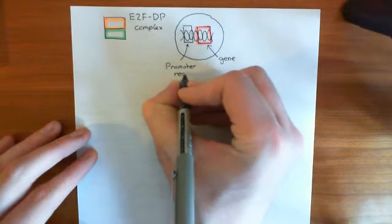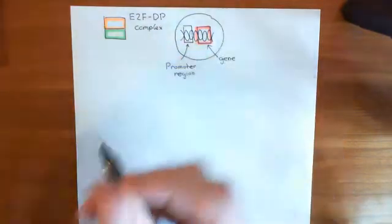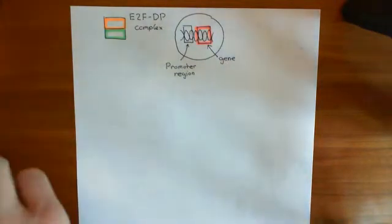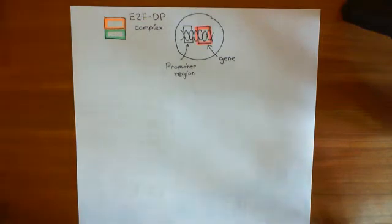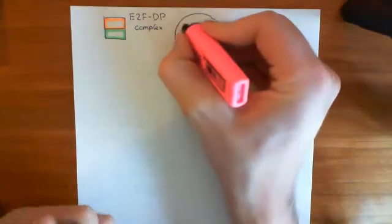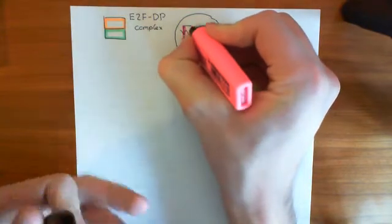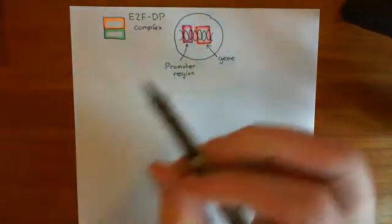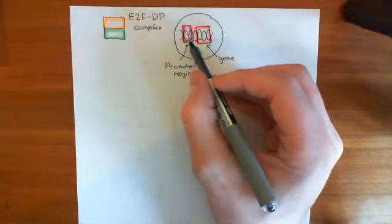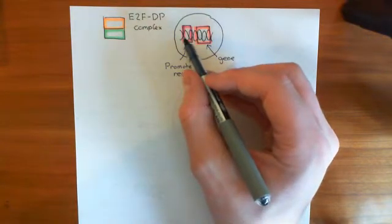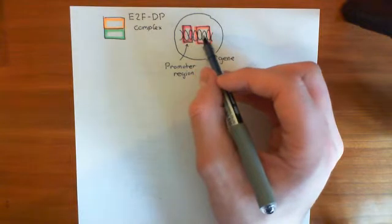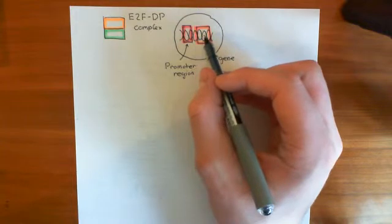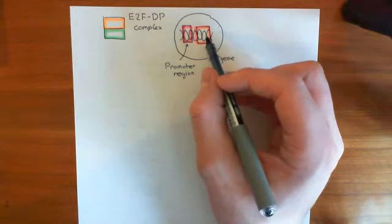Now, the promoter region is not coding. The gene is the bit that's actually going to be read by the ribosome and is then going to make the protein. The promoter region is not involved in actually making the protein. The promoter region is involved in recruiting the RNA polymerase enzyme to the gene. And remember, the RNA polymerase is the enzyme which will come and make a copy of the DNA. It will make an RNA strand which is complementary to the coding strand of the DNA.